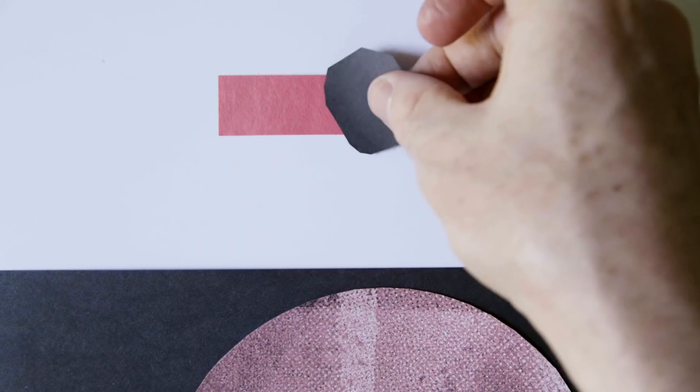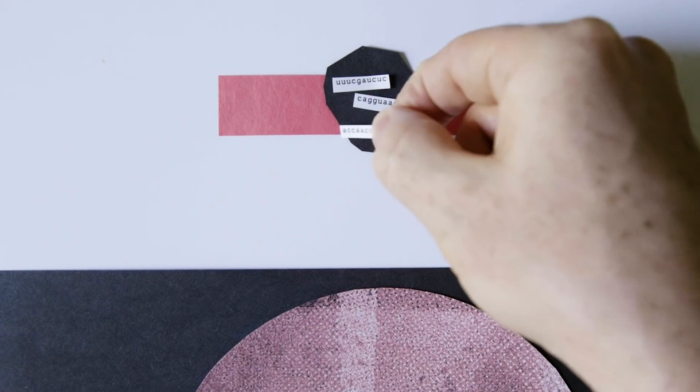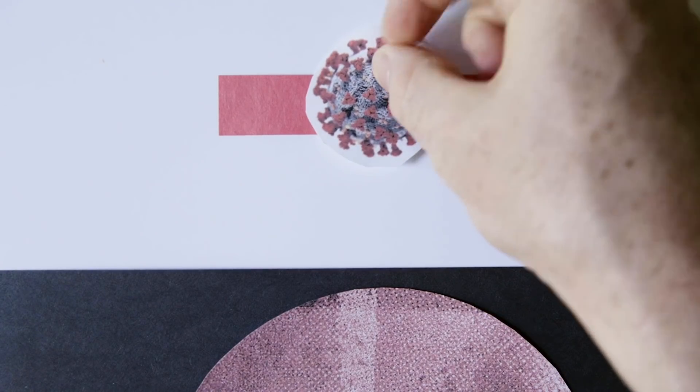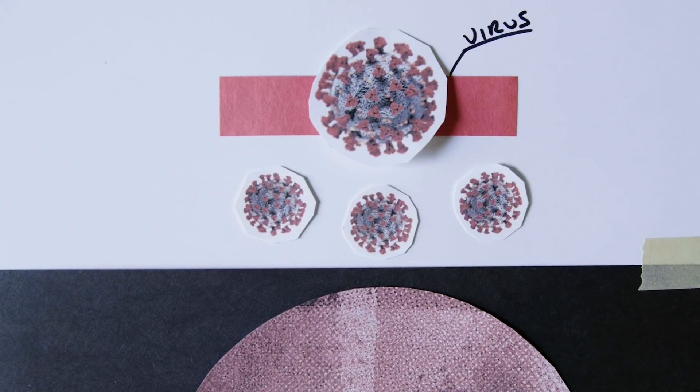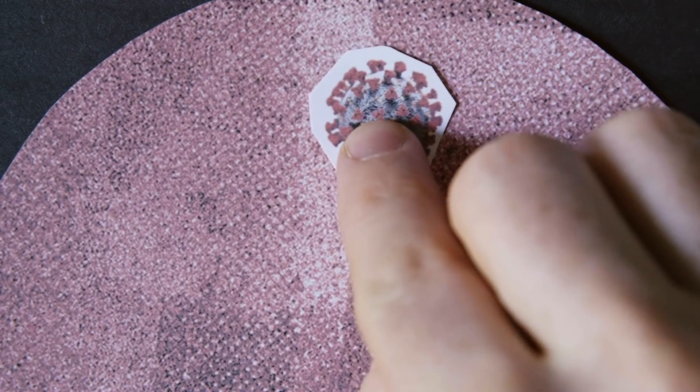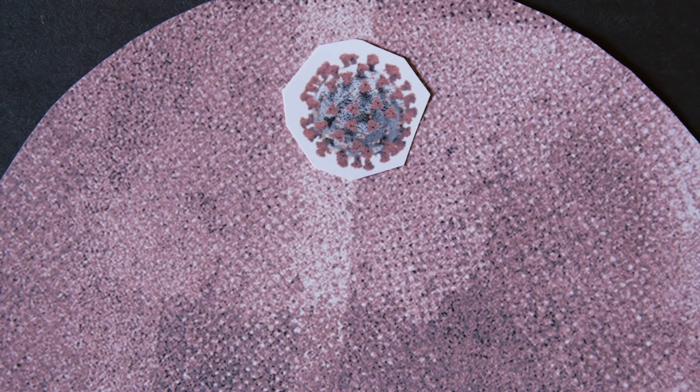A virus is essentially a loose strand of genetic material surrounded by a protein-based wrapper. Viruses exist to make copies of themselves. They spread by entering a host and hijacking its cells to replicate.